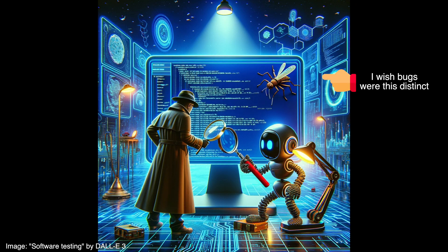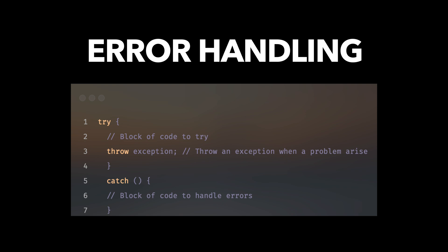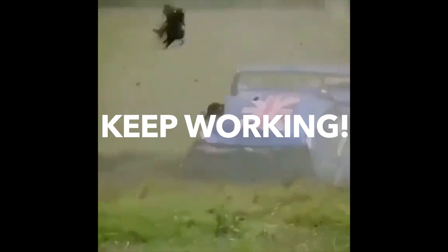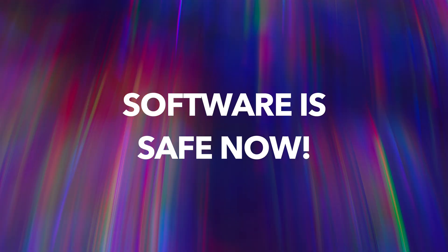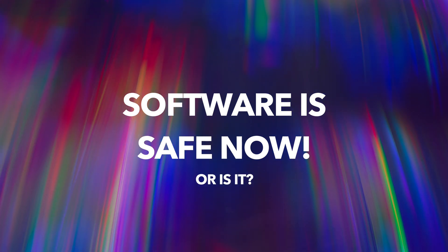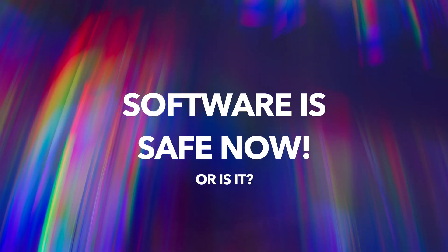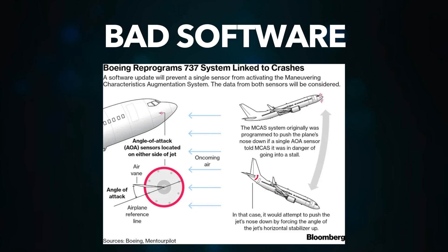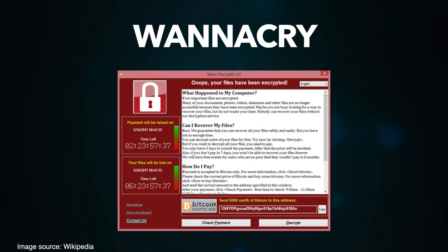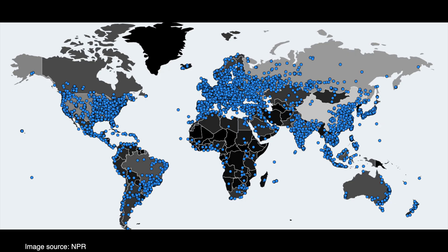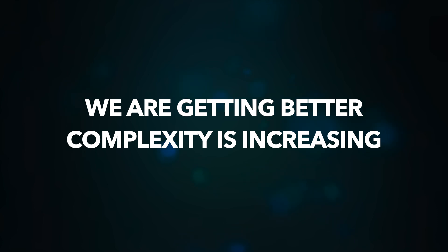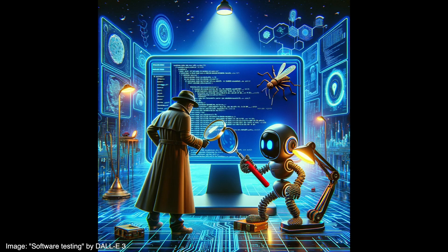Has software gotten safer since these tragedies? Yes and no. Nowadays there's a greater emphasis on testing and verification of software, and we've improved error handling and fault tolerance — the ability to continue operating even in the presence of faults. But there have been significant events in recent history that might make you question this. Consider the 2018 and 2019 Boeing 737 Max crashes, linked to flaws in the aircraft software, and the WannaCry ransomware attack of 2017, which impacted hundreds of thousands of computers and led to the UK NHS cancelling appointments and even surgeries.